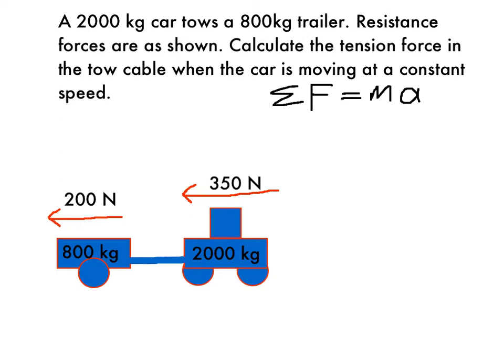This first part of the question asks you to calculate the tension force in the tow cable, and the car is moving at a constant speed. So, constant speed should tell you straight away that net force is zero. Constant speed means no acceleration. If acceleration is zero, then net force is zero.